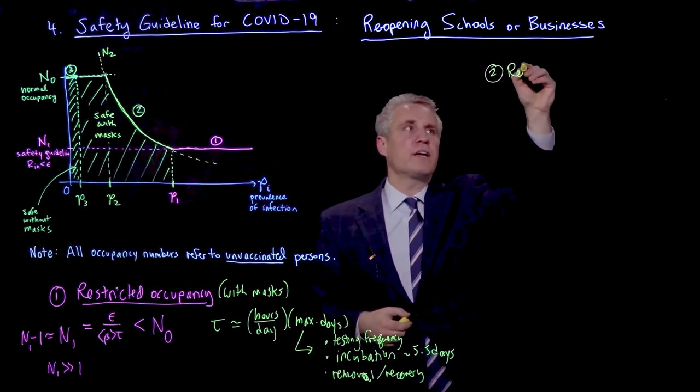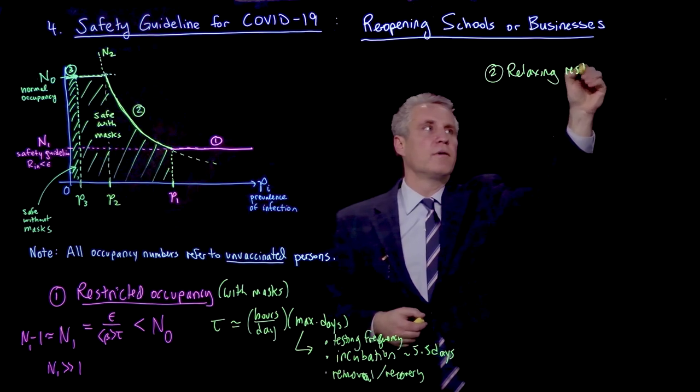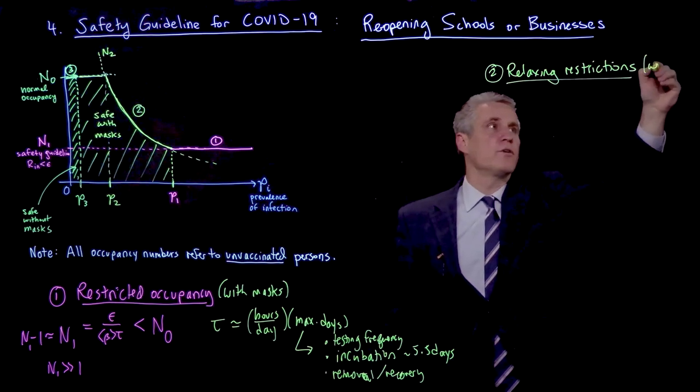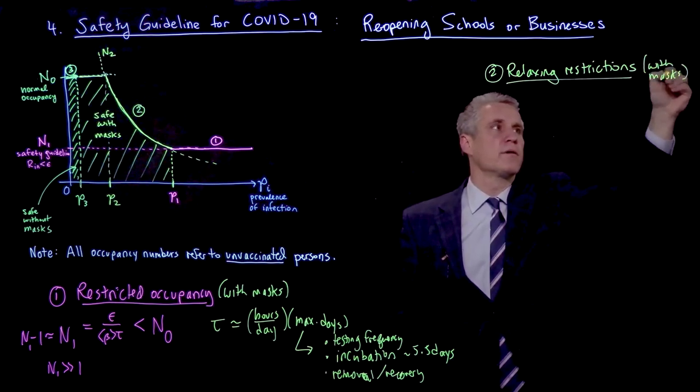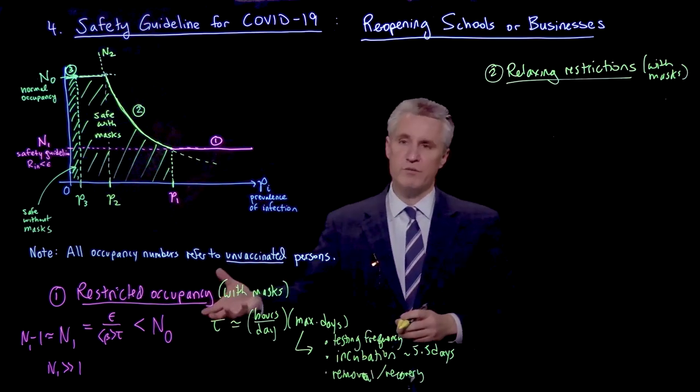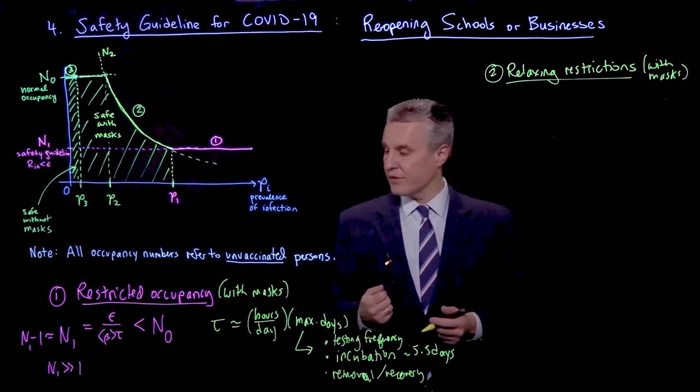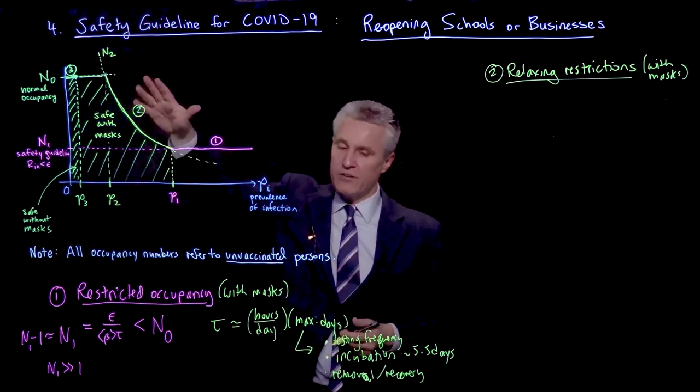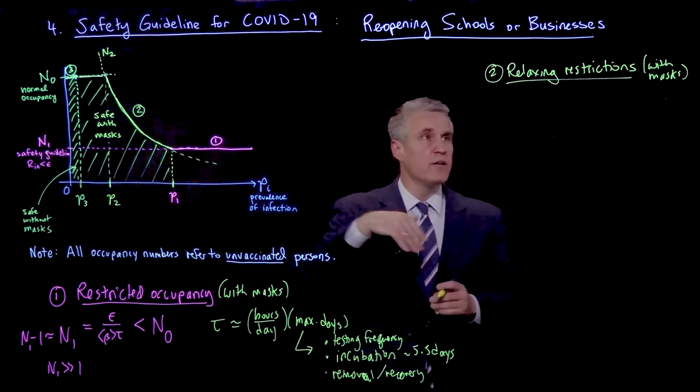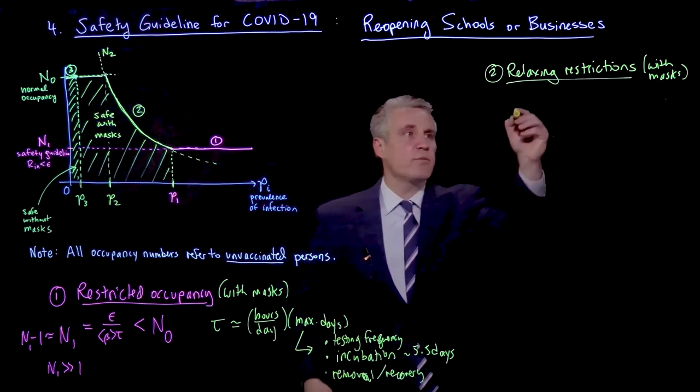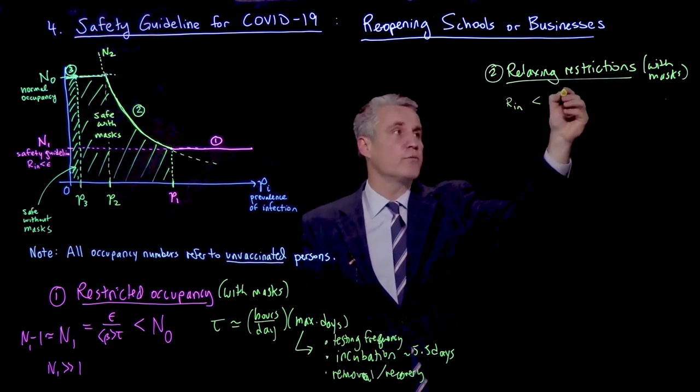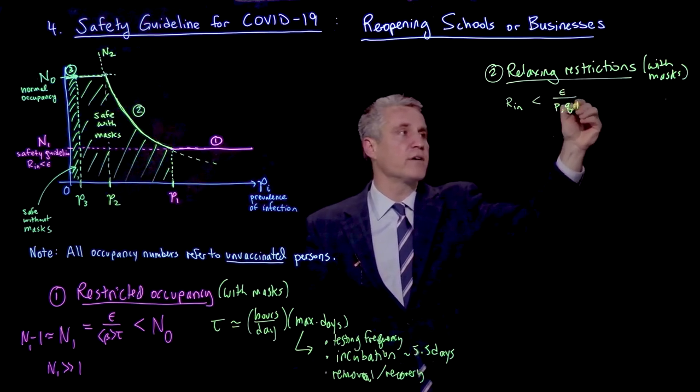So now let's ask ourselves, how would we start to reopen the space once we've decided on a safe occupancy during the greatest level of restrictions? So that would then lead us into a phase of relaxing restrictions. And this would still be with masks. So keeping in mind that masks are an essential part of achieving a reasonable occupancy when the pandemic is high and there's a lot of prevalence, and that we would only sort of start to relax occupancy first before we take away the suggestion to wear masks. And that would be then the last step.